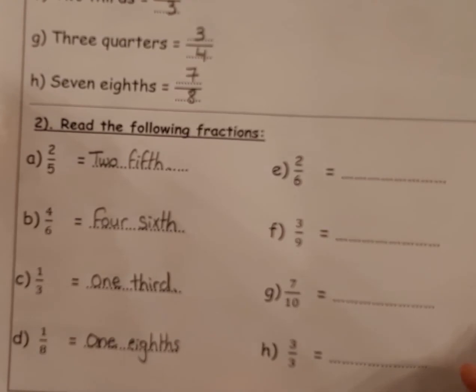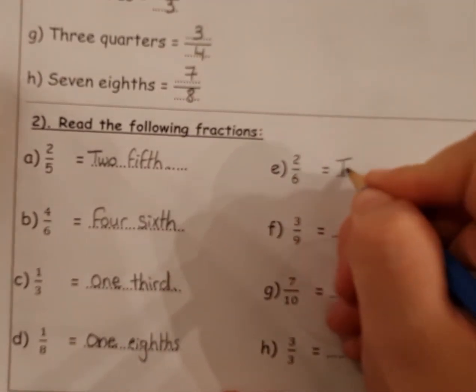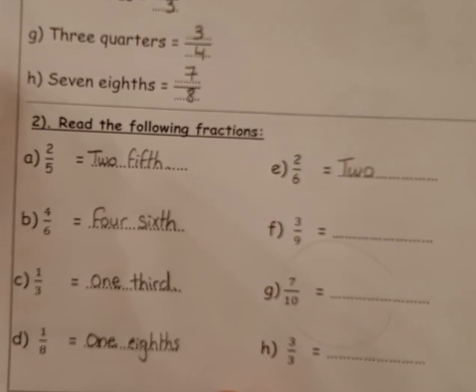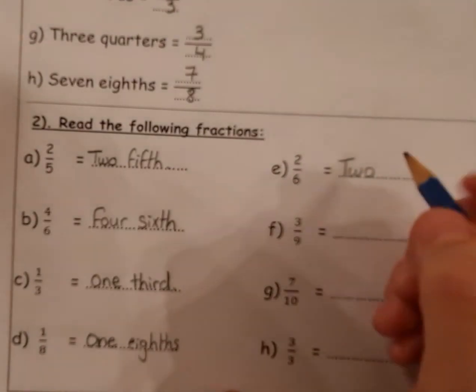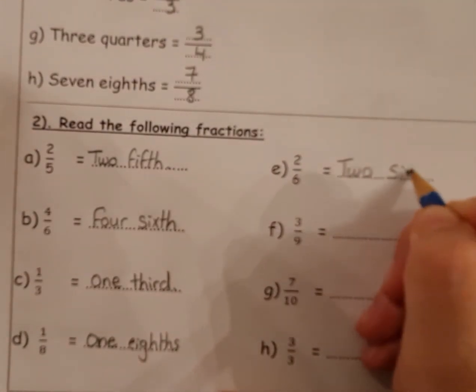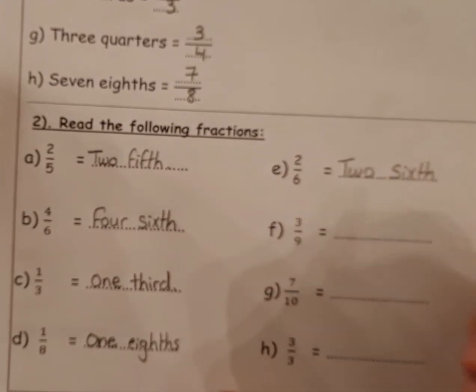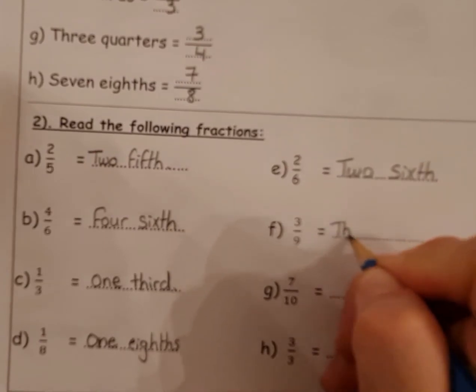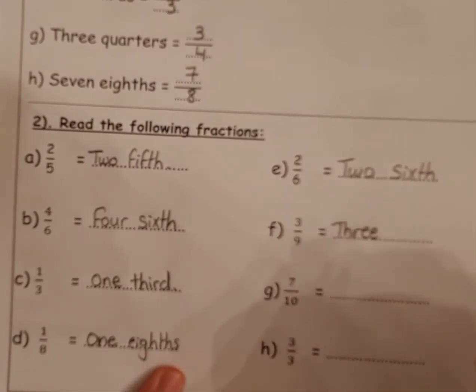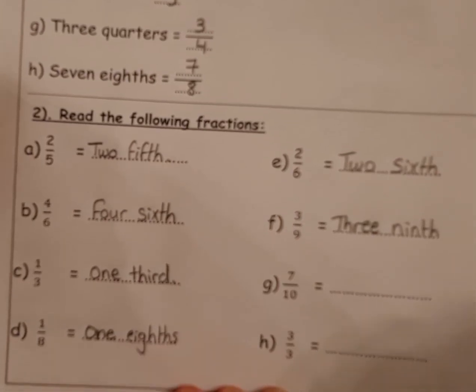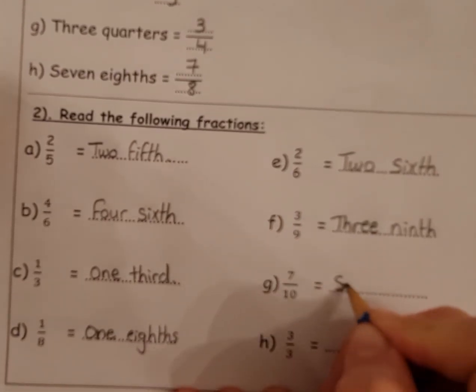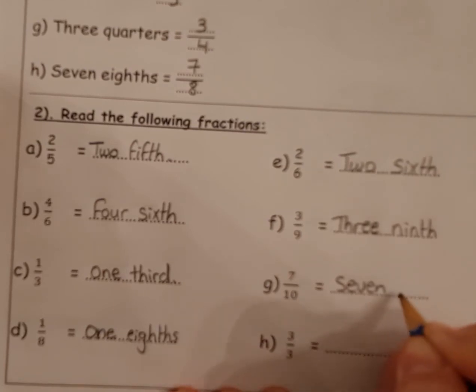This part, two over six. Two sixth. Okay, here is three - three ninth. It's so easy junior. Three, right? Here is seven, here is seven - seven tenth.